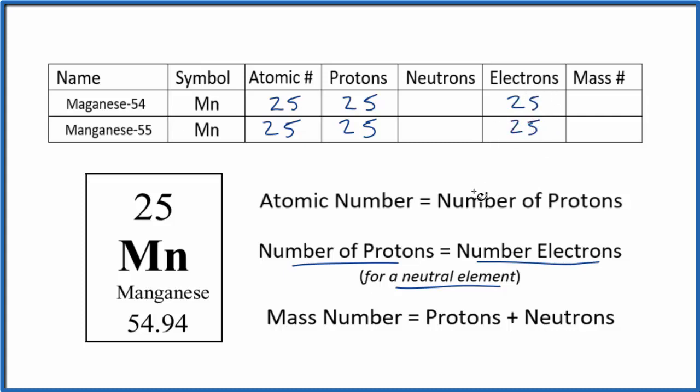For isotopes, the only thing that's going to differ is the number of neutrons, and therefore, the mass number will differ too. Let's figure the neutrons out now.